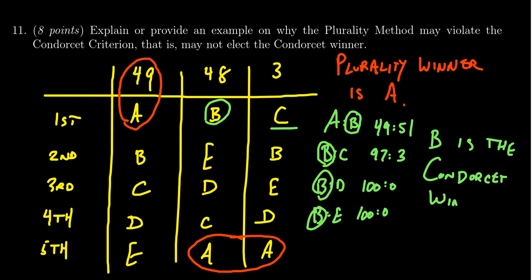So this was an example that I came up with to demonstrate that plurality can violate the Condorcet criterion. That is, the Condorcet winner might not be the winner of the election. But there could be many, many other examples you could come up with to solve this problem. So here's the Condorcet winner.